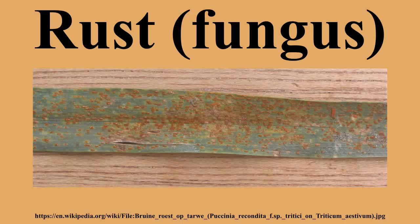Puccinia hemerocallidis: daylily is the primary host, Patrinia sp. is the alternate host — heteroecious and macrocyclic. Puccinia persistens subsp. triticina causes wheat rust in grains, also known as brown or red rust. Puccinia sorghi causes common rust in corn. Puccinia striiformis causes yellow rust in cereals. Uromyces appendiculatus causes rust of beans. Uromyces phaseoli: primary host is bean — autoecious and macrocyclic. Puccinia melanocephala causes brown rust in sugarcane. Puccinia kuehnii causes orange rust in sugarcane.